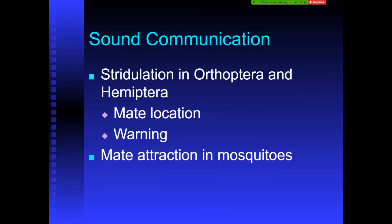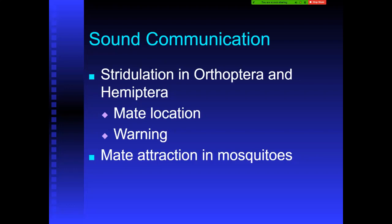Insects can also communicate through stridulation in Orthoptera — does everyone remember what Orthoptera includes? Grasshoppers and crickets. They can make sounds that help them locate mates. When you hear crickets making noise, that helps them find each other. Even wing beats in mosquitoes may help them find each other. Sound can also serve as a warning sign — if crickets suddenly go silent, it usually signals a predator is nearby.